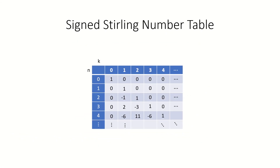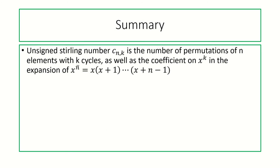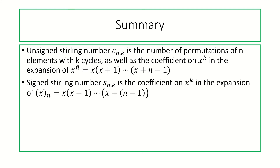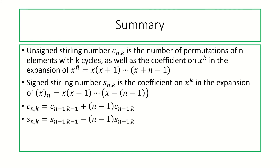To finish, here is an exercise: show that when n plus k is odd, the sign of the signed Stirling number is negative. To summarize: the unsigned Stirling numbers count permutations according to the number of cycles, and equivalently are the coefficients in the expansion of the rising factorial. The signed Stirling numbers have absolute value equal to the unsigned Stirling numbers and are the coefficients in the expansion of the falling factorial. We have recurrence relations for both, differing only in the sign of the last term.